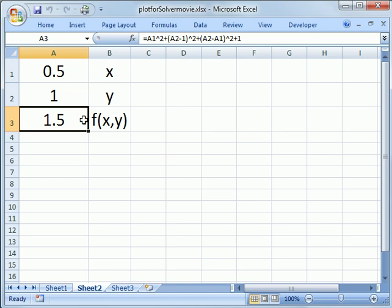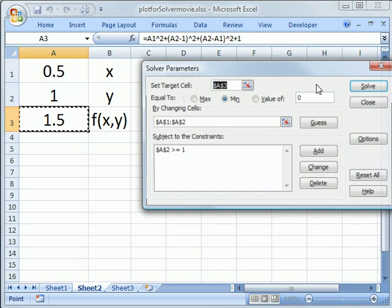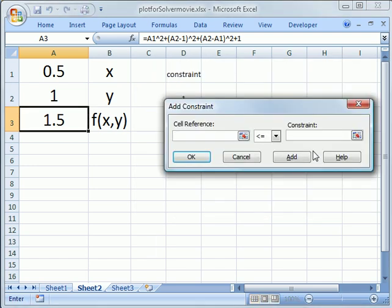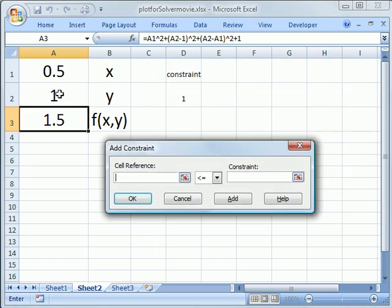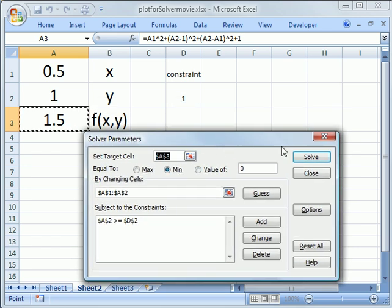All right, now we could actually put a constraint here of one, right? So now when we do our constraint, we can go back to the solver, and we can delete this constraint, add a new one, and we say that cell A2 has to be greater than or equal to cell D2. Okay, now that's set. We solve it. We get the same answer.